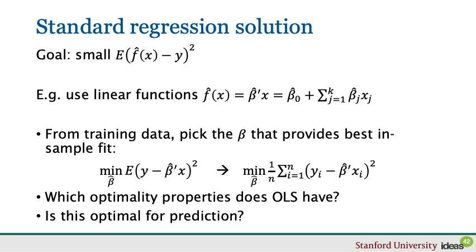OLS is the optimal unbiased estimator with low variance. But it is not immediately clear whether this is what we want for out-of-sample prediction. We can ask whether these properties translate into an optimal predictor out of sample. So, does having zero bias and low variance necessarily imply being a good out-of-sample predictor?